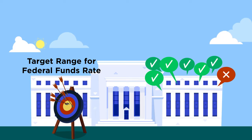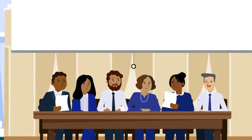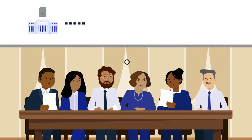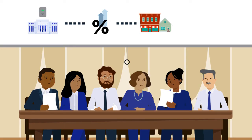With the target range set, the Fed then uses its policy tools to steer the Federal Funds Rate into this target range. When the Federal Funds Rate moves, it affects other interest rates, and interest rates affect overall financial conditions. These financial conditions, in turn, influence how households and businesses decide to spend and invest, and those choices, in turn, affect employment and prices.